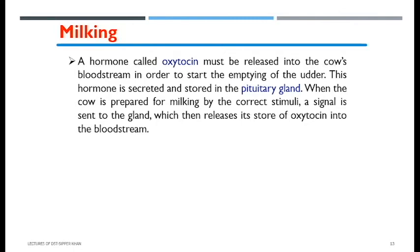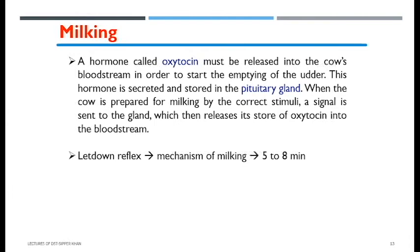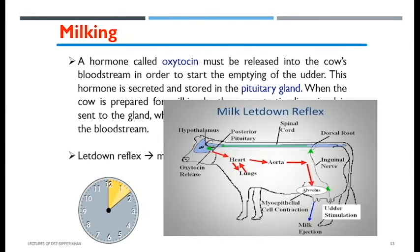The let-down reflex is basically five to eight minutes long in a cow. This is the window where you must milk the cow productively, because after this let-down reflex fades, the effect of oxytocin in the bloodstream will be diluted and completely disappear after eight minutes. If you attempt to strip the cow after this time, the unnecessary strain on the udder will make the cow irritated and milking will be very difficult. The let-down reflex duration is different for goats and sheep, which we will cover in later sections.